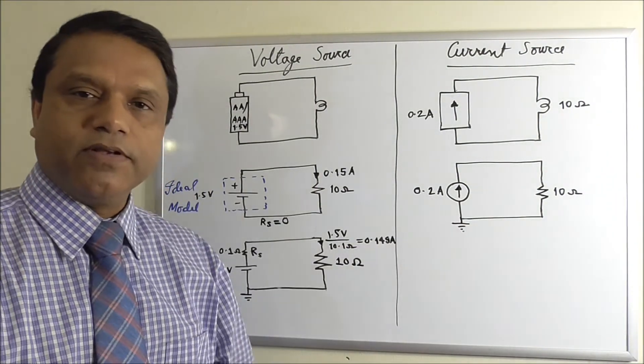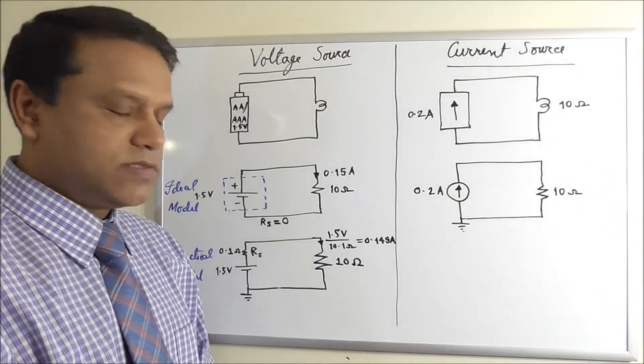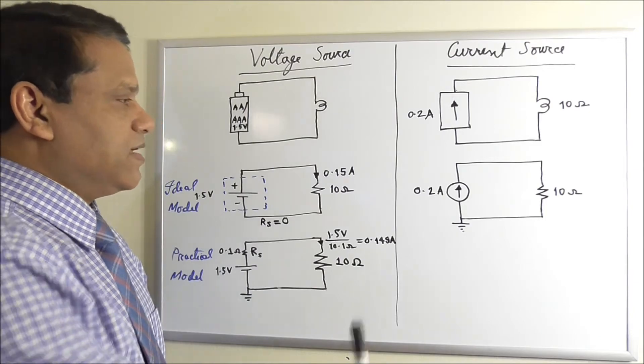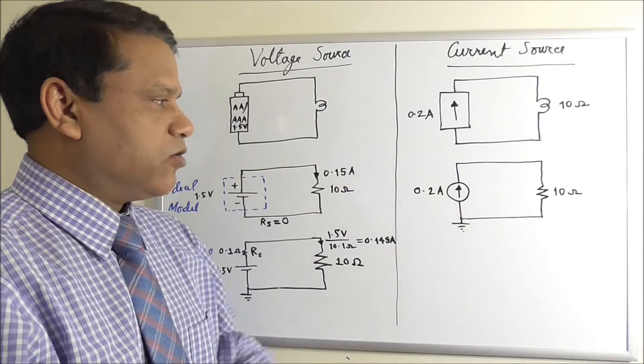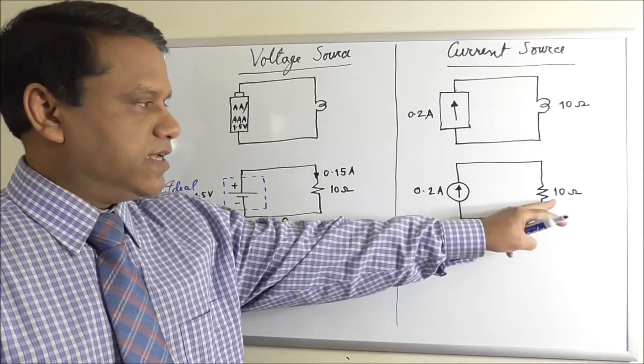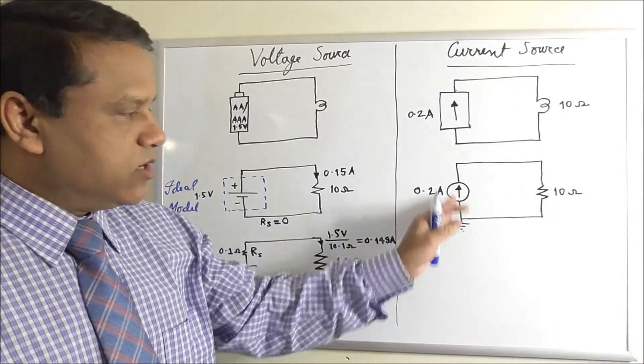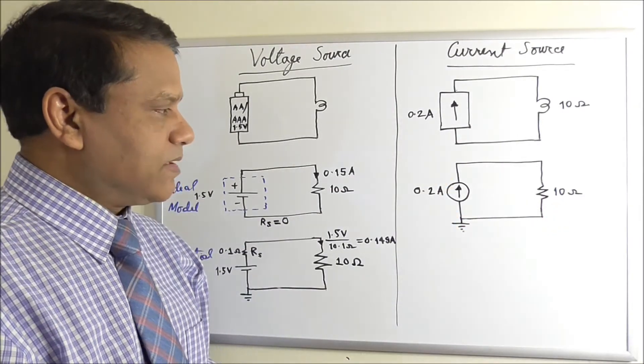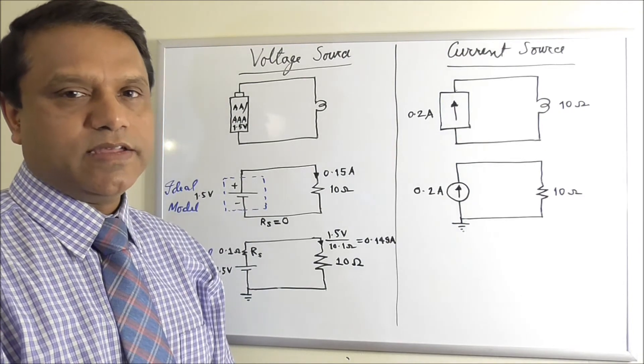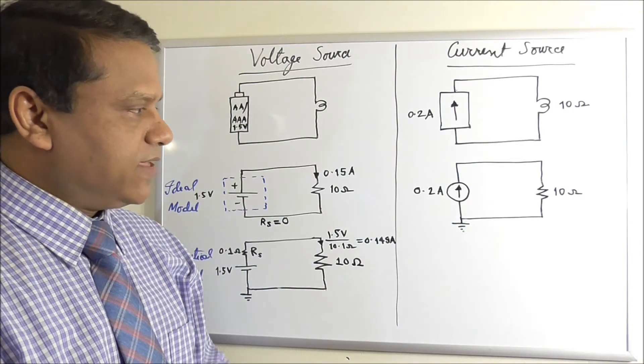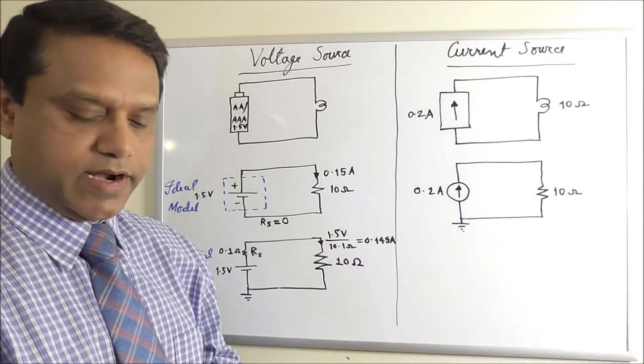So this is the circuit symbol of a current source. The difference is this will supply a current no matter what is the resistance here. If we change the resistance to 100 ohm, the current will still be 0.2 ampere. So a current source supplies a fixed current. Again, this is the ideal model of the current source.